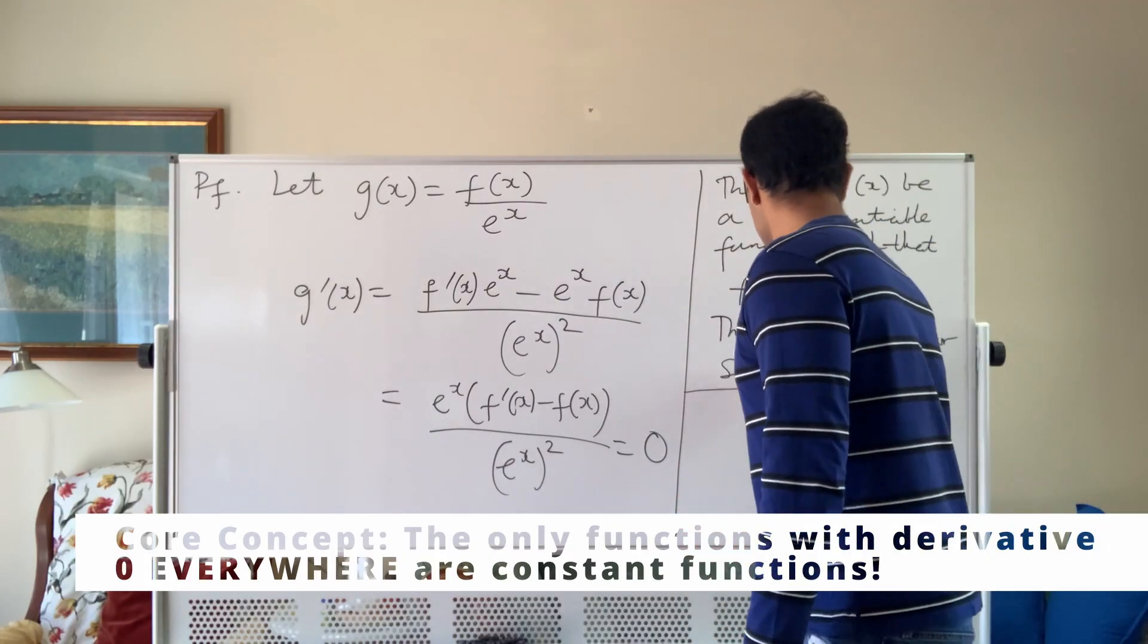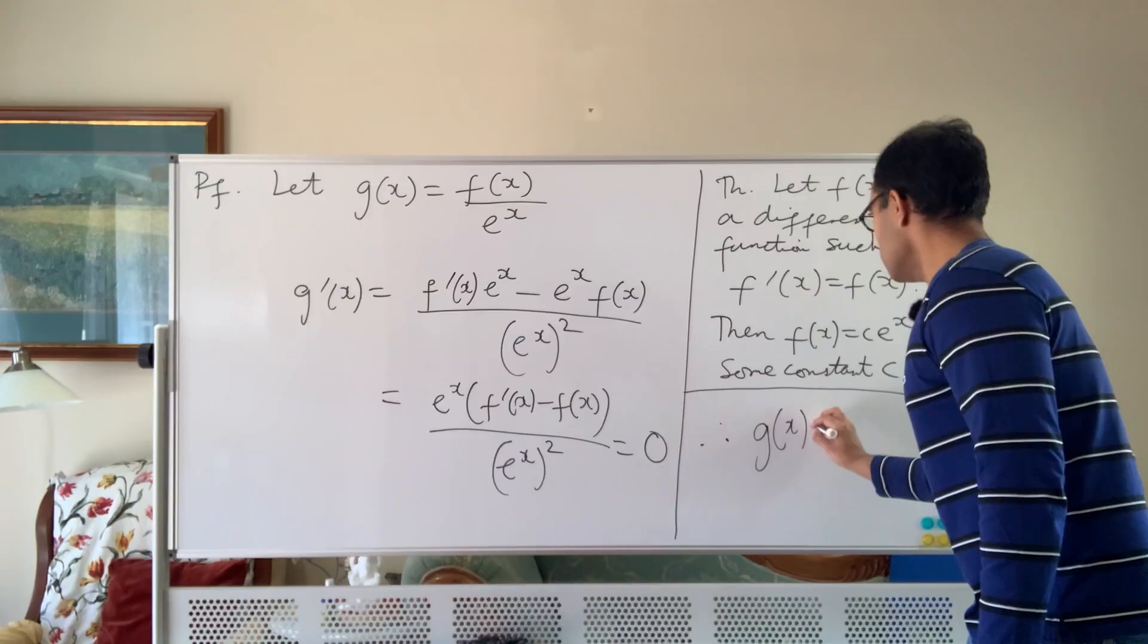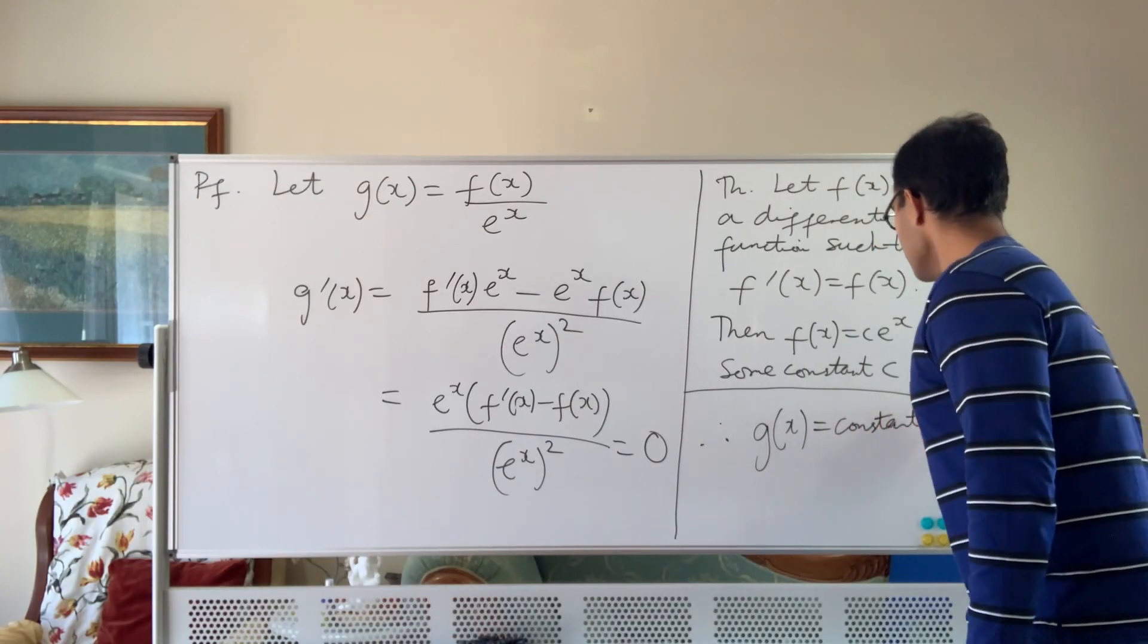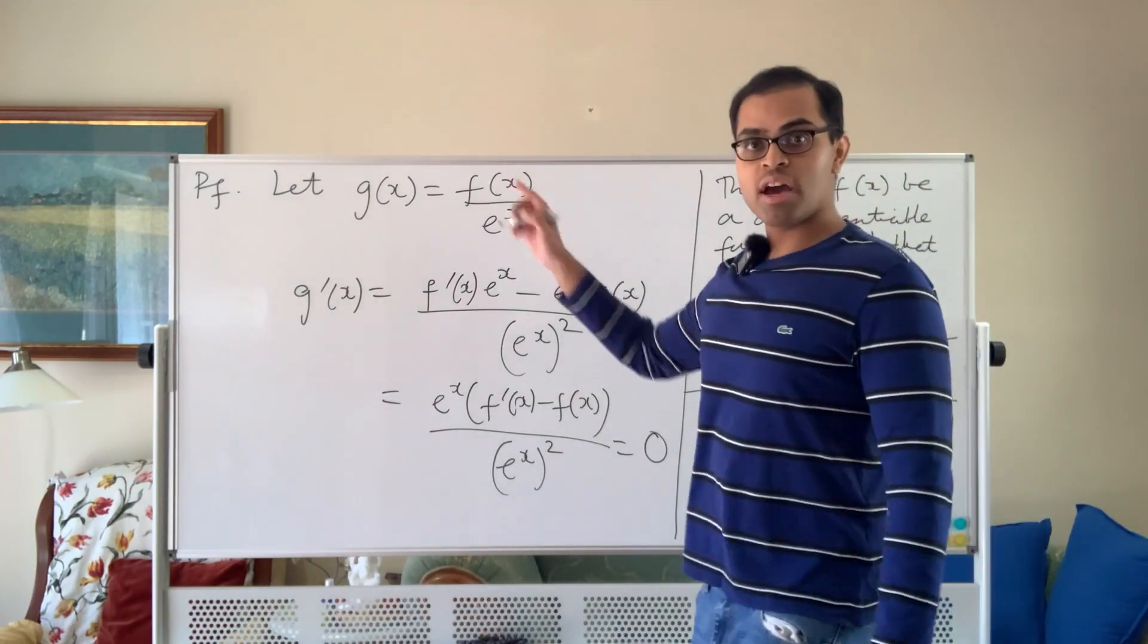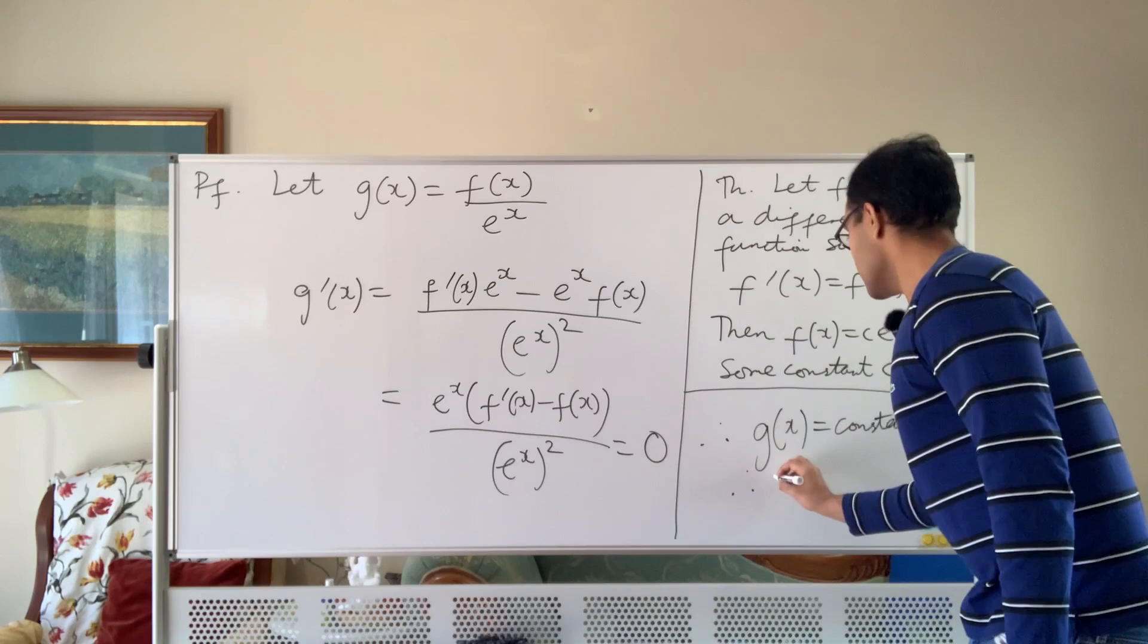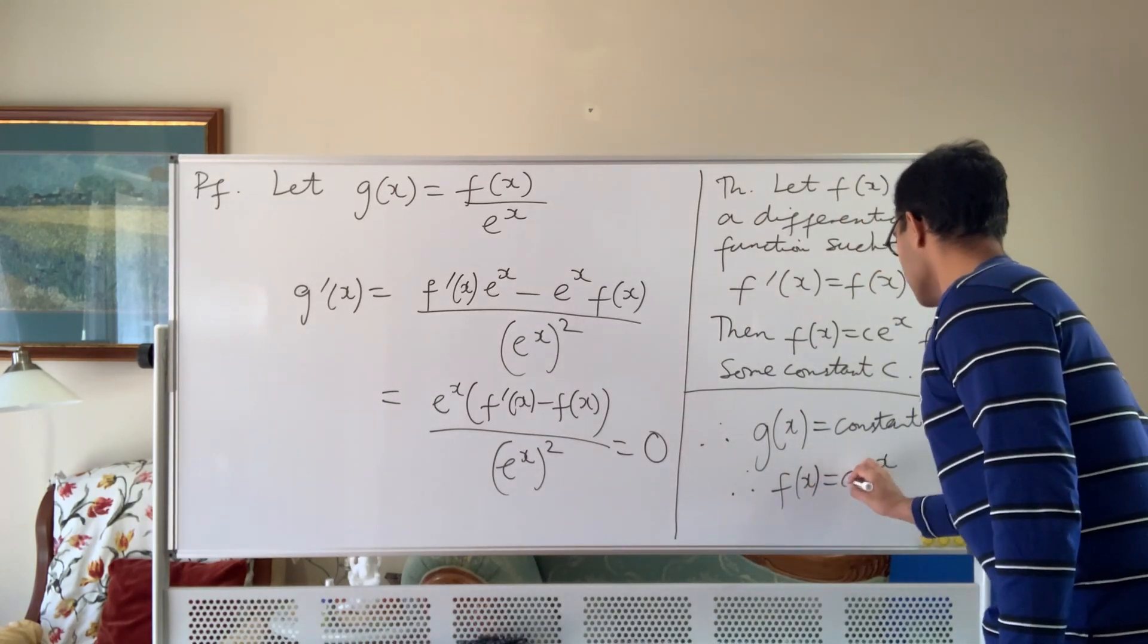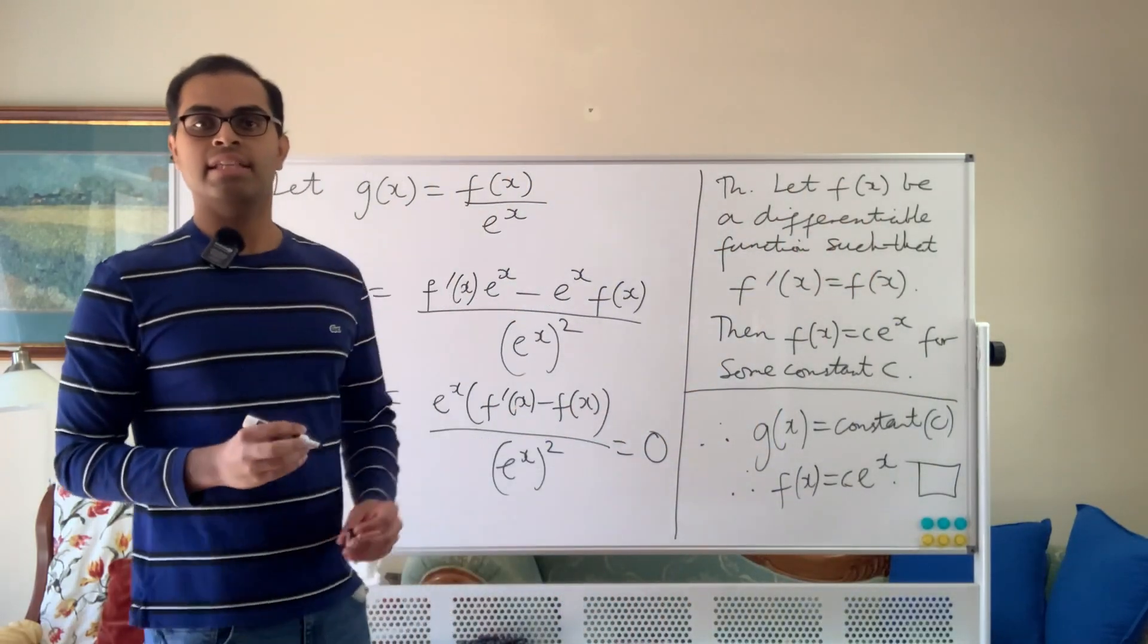So therefore, we get, so here continued, so therefore, g of x is equal to a constant. Okay, so c, we call it c. And therefore, because g of x was the ratio f of x by e to the x, we know that therefore that f of x over e to the x is c. So therefore f of x is equal to c times e to the x, and our theorem is proved, and we draw a square box, and that indicates the end of the proof.